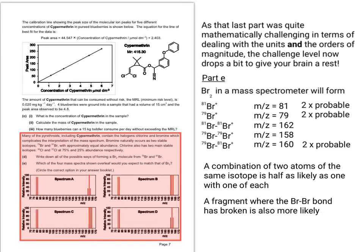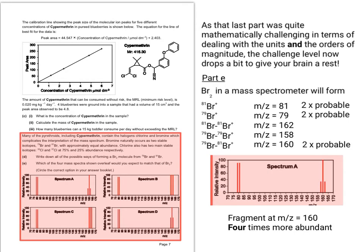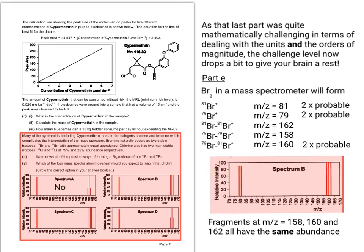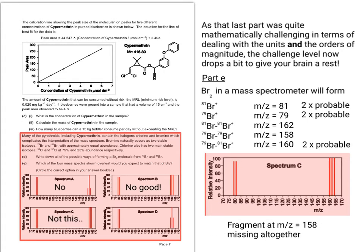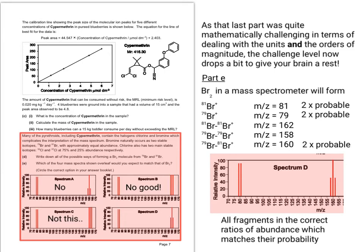Looking at each spectrum in turn: in spectrum A, the fragment at m/z = 160 is four times more abundant than those at 158 and 162 — so it's not that one. Spectrum B is no good either because the same three fragments appear to have the same abundance. In spectrum C, the fragment at m/z = 158 is missing, so it's not that one either. In spectrum D, all fragments are in the correct ratios of abundance matching their probabilities, so spectrum D is the correct answer.